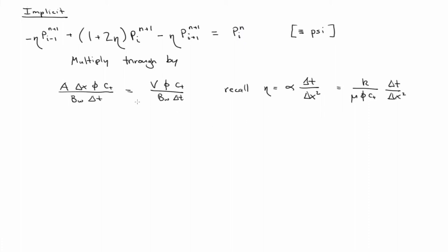And also just recall that eta is equal to alpha delta t over delta x squared, which is equal to k over mu phi ct delta t. So we're going to plug in these values for eta and at the same time multiply both sides of the equation by this. And you'll see that some terms can cancel out. So we have minus k...